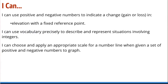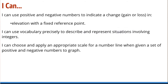A quick look at some ICAN statements. I can use positive and negative numbers to indicate a change, a gain or a loss in elevation with a fixed reference point. I can use vocabulary precisely to describe and represent situations involving integers — we've used vocabulary for money, temperature, and elevation in the last two lessons. I can choose and apply an appropriate scale for a number line when given a set of positive and negative integers to graph. We have to think carefully about the situation as we choose that scale to get the best representation of these integers. That concludes Module 3, Lesson 3. If you've got questions, make sure you talk to your teacher and complete your problem set.